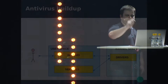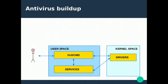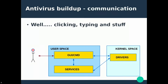If we draw a picture, it would be something like this. The lines between the components show communications between different parts. And then there is the human interface with the GUI — clicking, typing, and all this kind of stuff that a lot of people usually do.